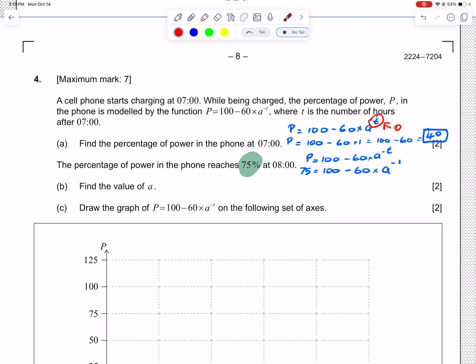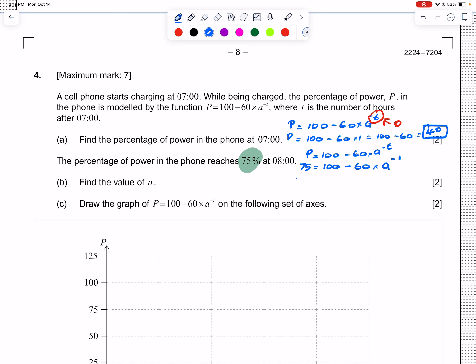If you remember your exponent rules, then you should know how to solve this. You may recall that a negative exponent can be turned positive if we take it from the numerator and put it in the denominator. So we get 75 = 100 - 60/a^1, but we don't have to write that power of one because a to the power of one is just a.